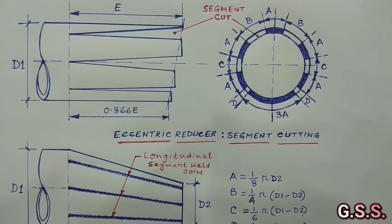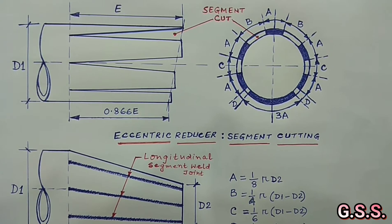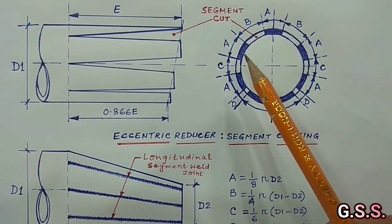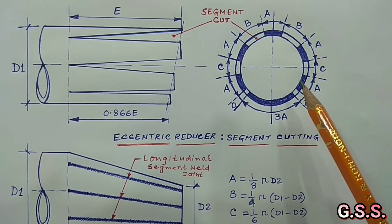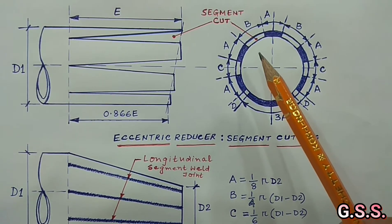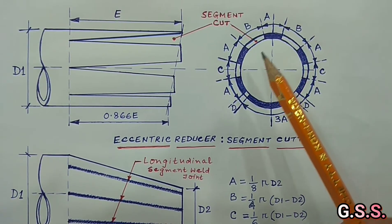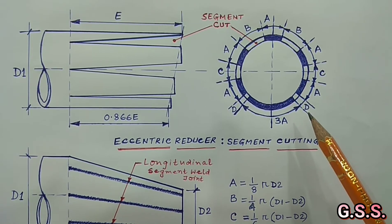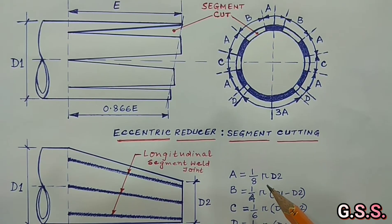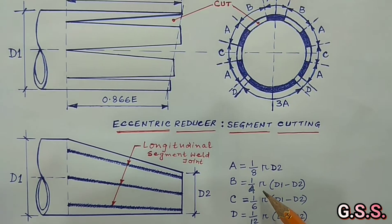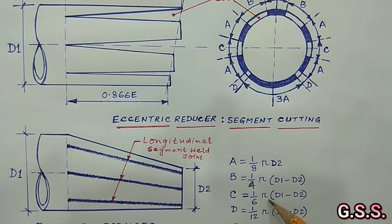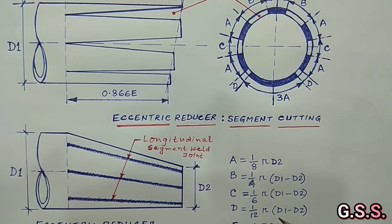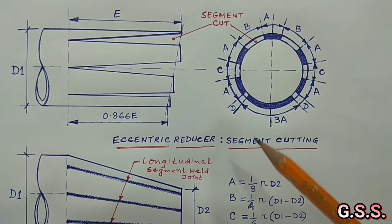This is the segment cutting drawing for an eccentric reducer. There will be 6 uncut segments: 5 having width A and 1 having width 3A. And there will be 6 cut segments: 2 having width B, 2 having width C, and 2 having width D. Where A is (1/8)πD2, B is (1/4)π(D1 − D2), C is (1/6)π(D1 − D2), and D is (1/12)π(D1 − D2).